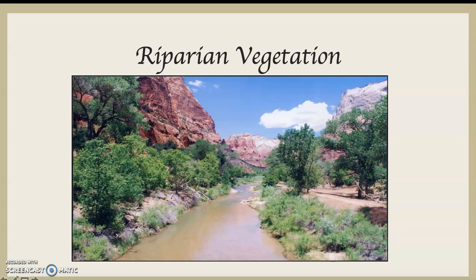You're familiar with many of these types of plants, especially the trees. Willow trees, like the very famous Weeping Willow, is this type of vegetation. As is Aspen and Cottonwood — you know, the one with the little white things that look like cotton that float around in the air. And Dogwood. So all of these are types of this sort of riparian vegetation.